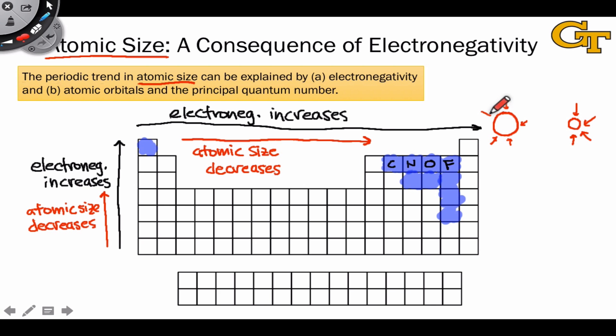We can think qualitatively about this pulling of electrons effect, the large electronegativity and the holding onto electrons as resulting in a smaller atom as the electrons are pulled closer to the nucleus. This is what we mean when we say that the atomic size trend is a consequence of electronegativity.